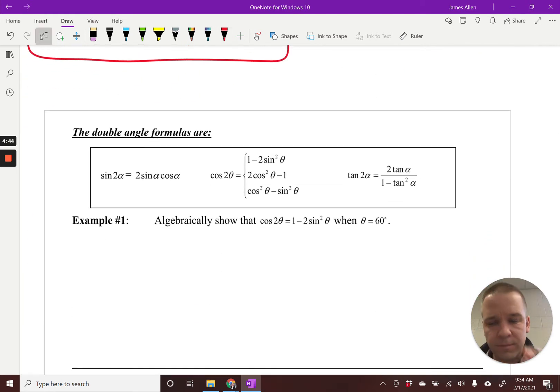Here are our double angle formulas. We have sine. We've got cosine. These two up here are derived from our Pythagorean identities, and then we got our tangent one. Feel free to jot these down. Just do it. Pause it, do it. We're going to do example one now.